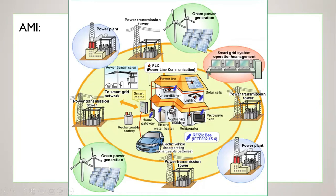From this diagram we can see the advanced metering infrastructure. In the house we have smart appliances which send data to smart meters, which use two-way communication and send this power and energy data to cloud storage and smart grid operation management systems through the smart grid network, which may be a power line communication system, broadband over power line, or fiber optics.